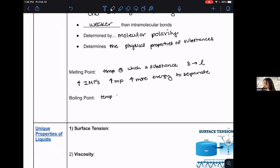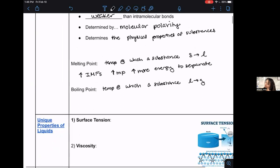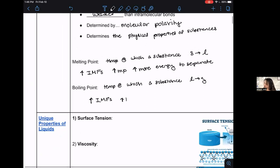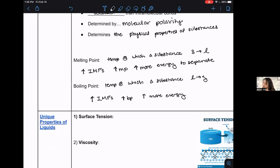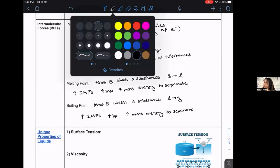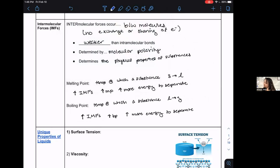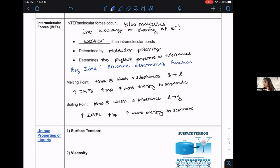Boiling point. This is the temp at which a substance transitions from liquid to gas. Similar idea. The higher the IMFs, the higher the boiling point, the more energy to separate even more. You're separating further, further, further. This idea that the physical properties of a substance are determined by the polarity or the structure of an atom or a molecule is a really big idea. In chemistry, we often explore how structure determines function.